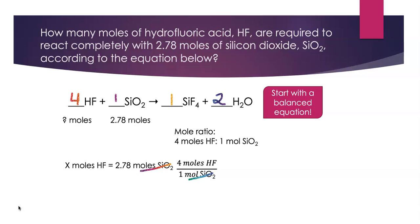So now I really just need to do 2.78 times four, and I get an answer of 11.1 moles of HF. I do report my answer with three sig figs because I had three sig figs in 2.78 moles. So three sig figs are appropriate here.